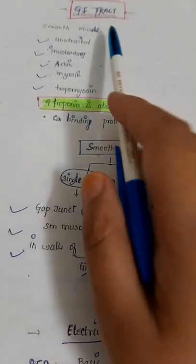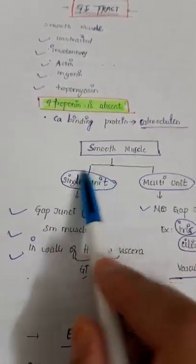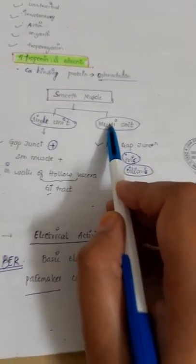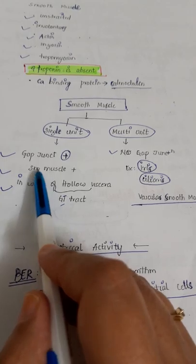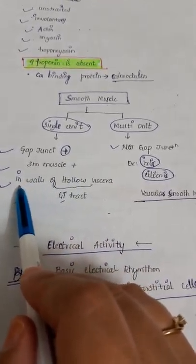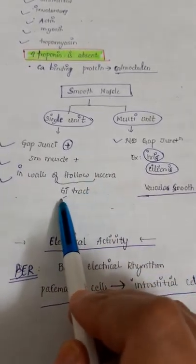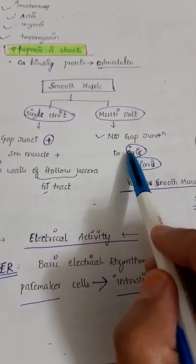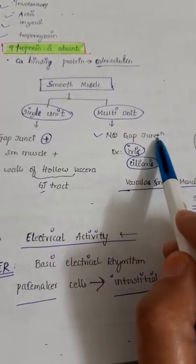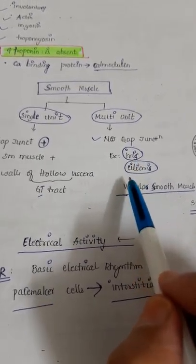Smooth muscles which are present in the GI tract are either single unit or multi-unit. Single unit smooth muscles do have gap junctions and are present in the walls of hollow viscera like the GI tract. But multi-unit smooth muscles don't have any gap junctions, for example iris.